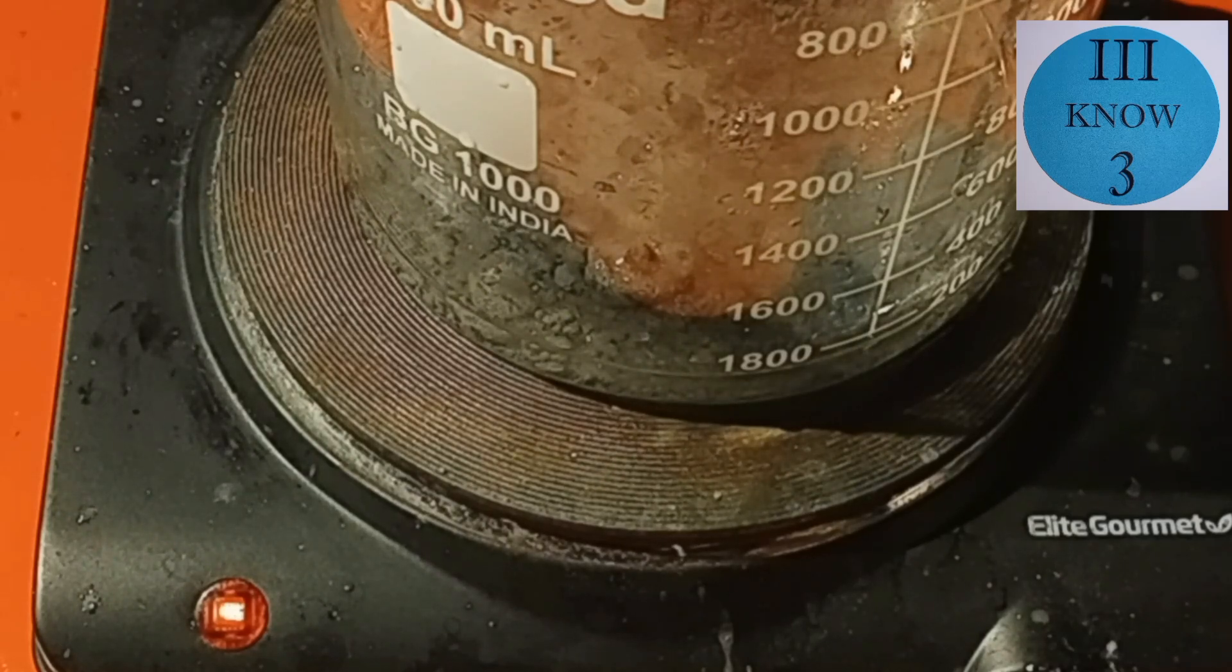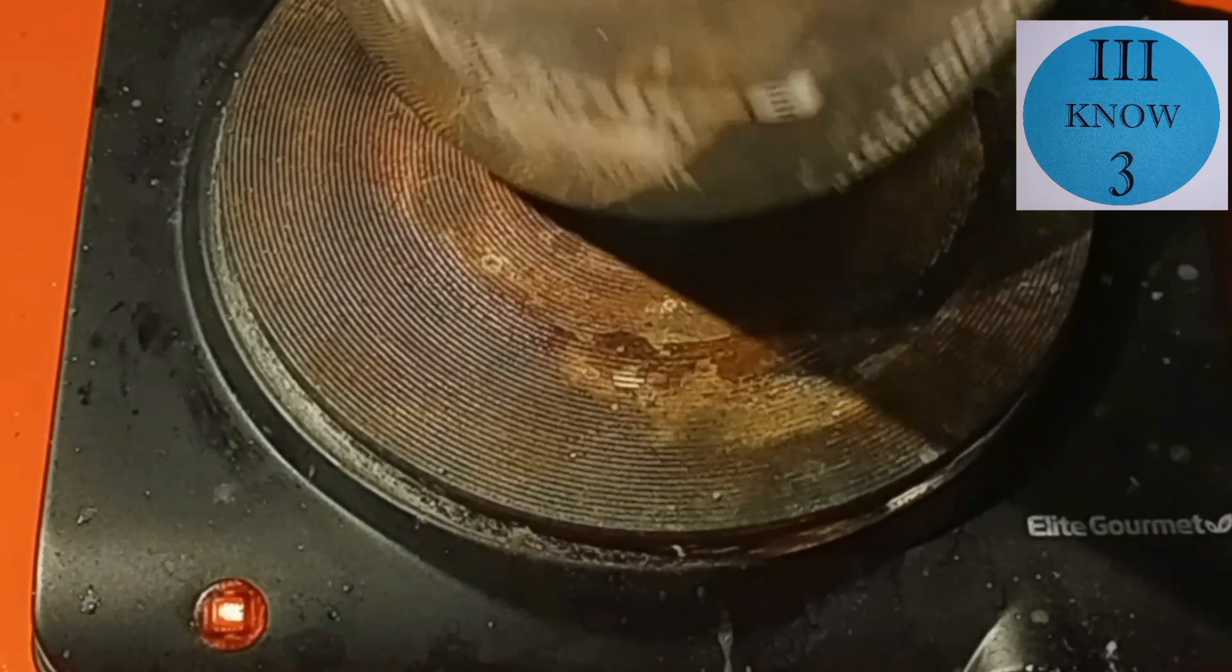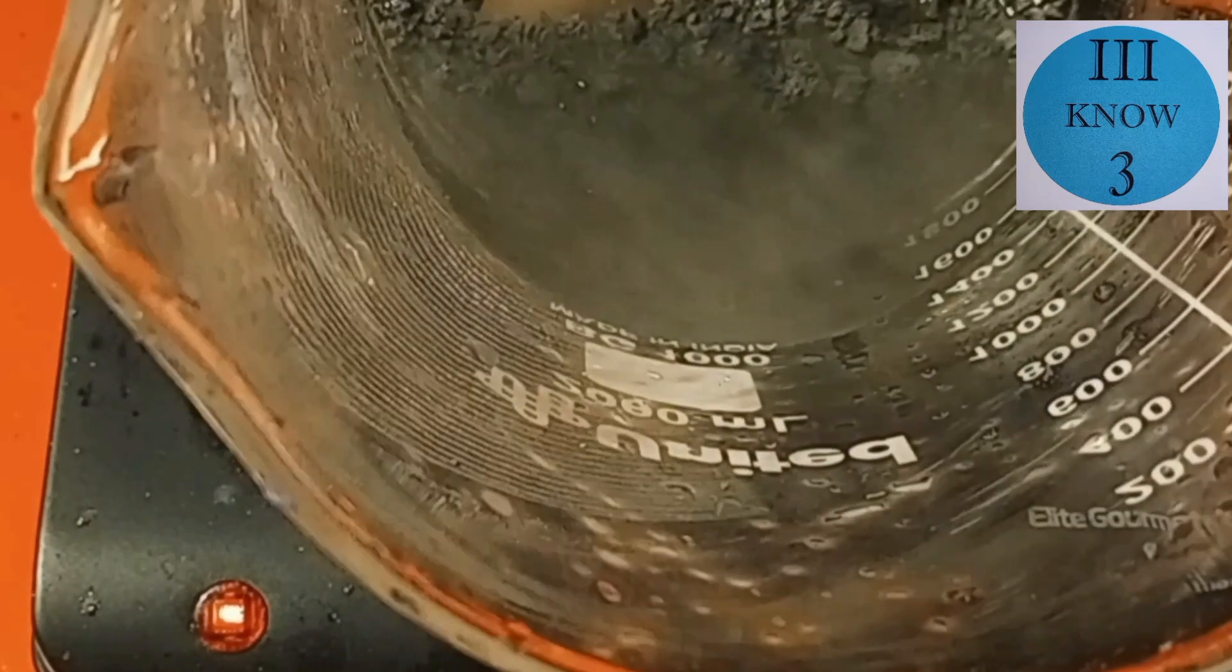We started with a tin ingot that was supposed to be 96% pure that we melted down in the melting tin metal video. And right now we're running this on low heat.